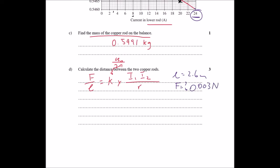So we know the force is 0.003 newtons. We already know what the k constant is. You can find that on your data sheet. That's 2 times 10 to the power of minus 7. Current 1 is 50 amps. Current 2 is 24 amps. And we are trying to find the radius.